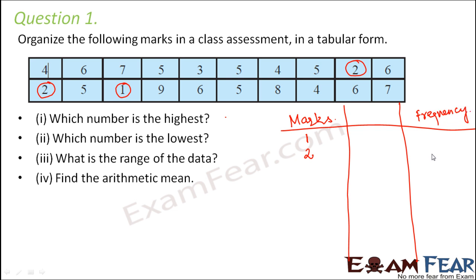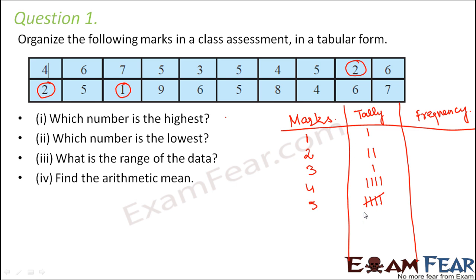So 2 gets repeated 2 times, and here we put the tally symbol. 1 is repeated 1 time. 3 is repeated 1 time. 4 is repeated 4 times. 5 is repeated 5 times. 6 is repeated 4 times. 7 is repeated 2 times. 8 is repeated once. And 9 again is repeated once.